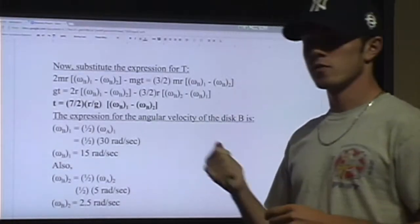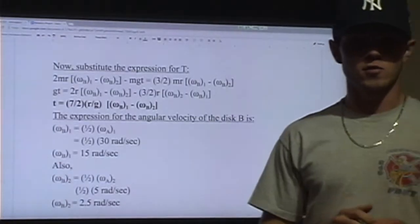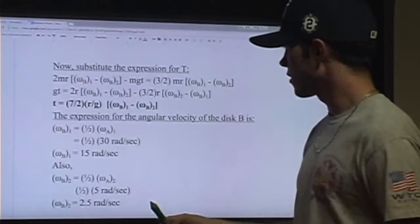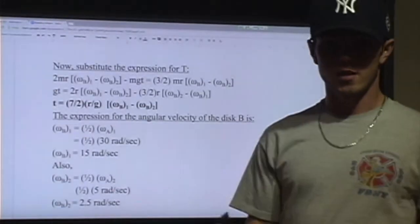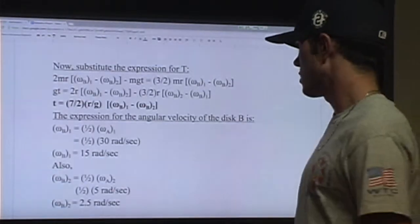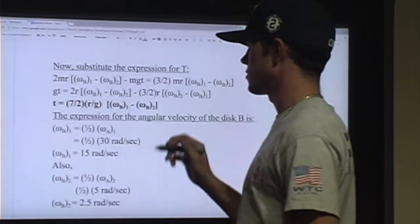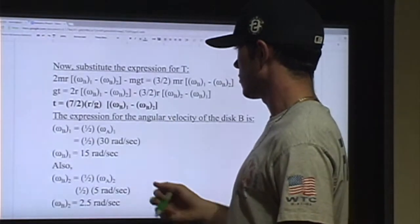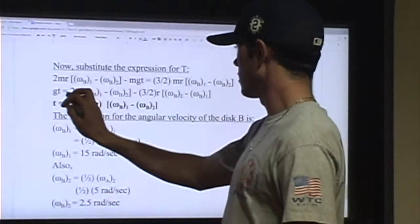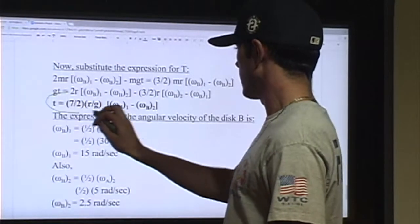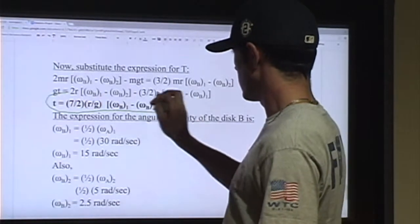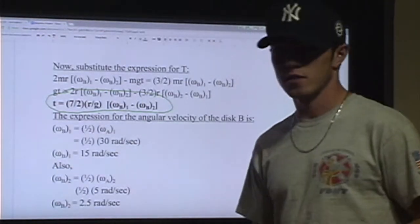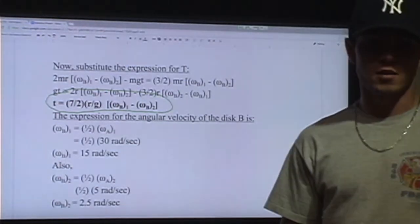So now we're going to substitute our original tension equation into the equation for time, which gives us 7 times the radius divided by the acceleration of gravity, multiplied by the angular velocity of B in the first state minus the angular velocity of B in the second state.